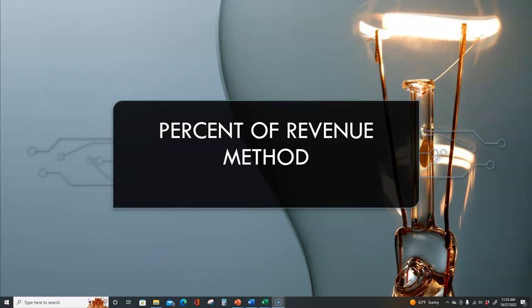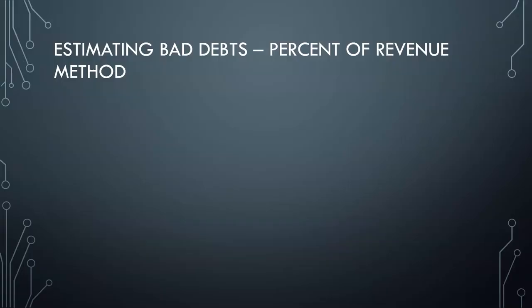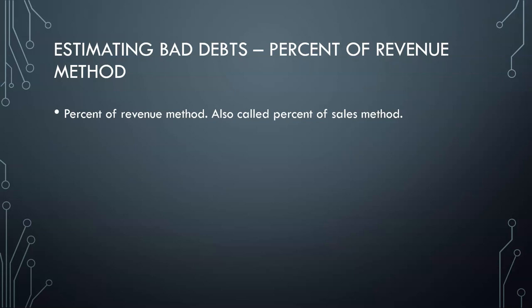Under the allowance method, there are three methods to estimate bad debt expense. The first method we're going to look at is called the percent of revenue method. The percent of revenue method is also sometimes called the percent of sales method, so if you see percent of sales method, it's the same as percent of revenue method.